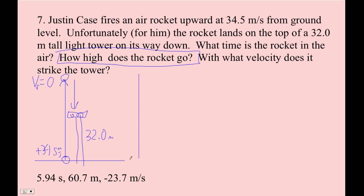Okay, so let's solve this. We go X, VI, VF, A, and T. X we don't know, we'd like to know. This is positive 34.5. This guy's zero, this is negative 9.8. And we don't know the time, and we can't say that it's half of this time, because it spends more time going up than going down.